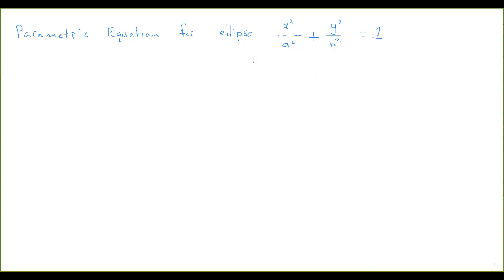I want to discuss how to find the parametric equation for an ellipsoid. I'm going to start by reminding you what the parametric equation is for an ellipse. Remember that the parametric equation for a circle of radius 1 is, just in the plane, cosine t, sine t. So let's start from this parameterization for a circle and see if we can end up with the parameterization for an ellipse.